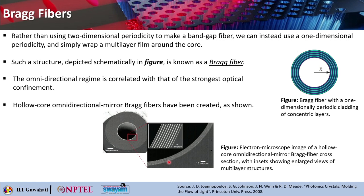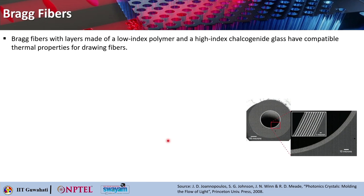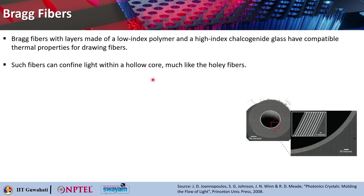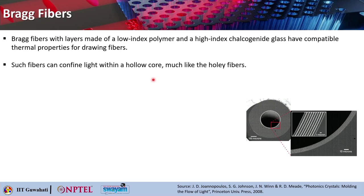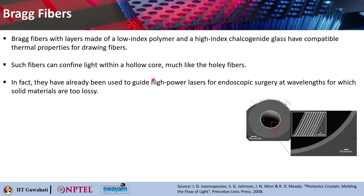From here we zoomed into this part and then again we look into more details. Bragg fibers with layers made of low index polymer and high index chalcogenate glass have compatible thermal properties for drawing the fibers. These are the two materials being used, and such fibers can confine light within a hollow core very much similar to the holey fibers.